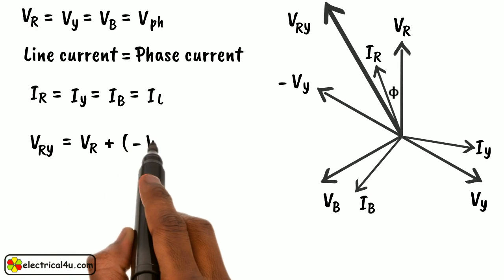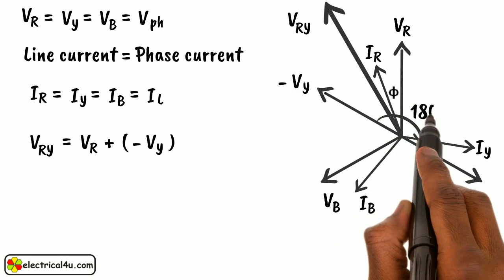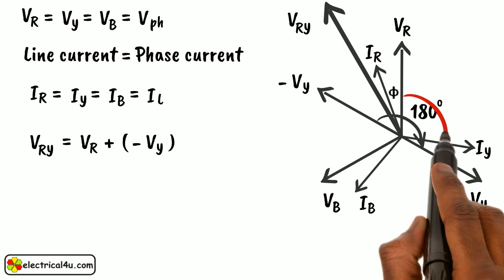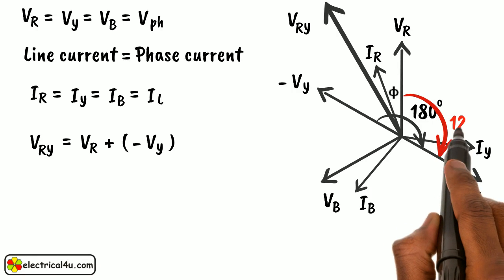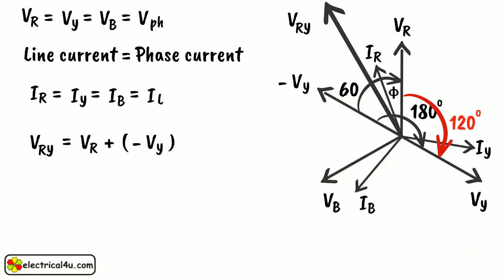Now as angle between VR and VY is 120 degrees, the angle between VR and minus VY is 180 minus 120, that is 60 degrees.